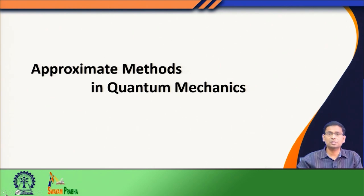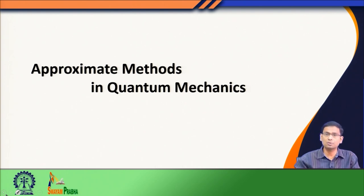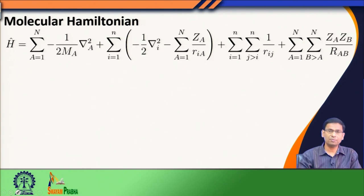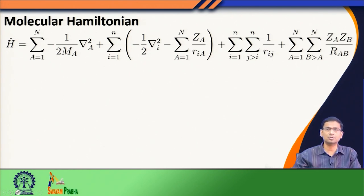From now onwards, we will spend some lectures discussing different approximate methods and how we can use them to solve quantum mechanical problems of our interest. In today's class, before we look for any particular quantum mechanical method, let us first recall what we discussed in an earlier class — for example, we wrote down the molecular Hamiltonian.